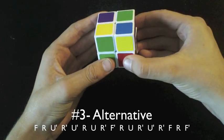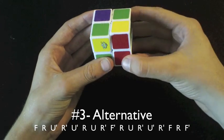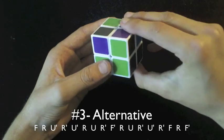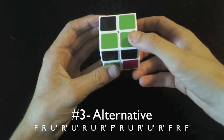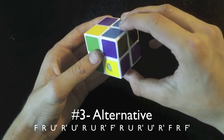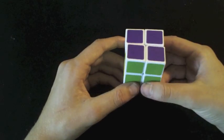F, R, U prime, R prime, U prime, R, U, R prime, F prime, R, U, R prime, U prime, U prime, R prime, F, R, F prime. And as you can see, it has finished the cube.